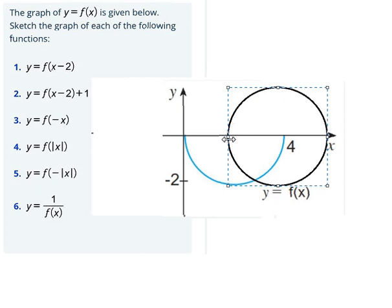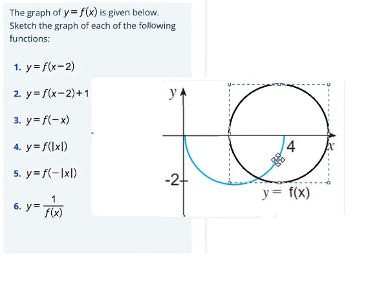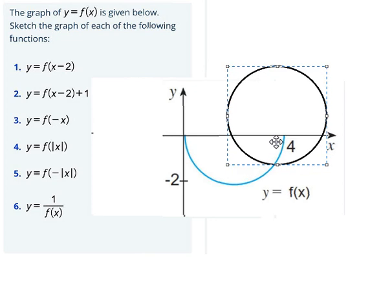Question number two, we have plus number one. That means the graph will go up one unit, so that should be like this. This is the graph of number two.